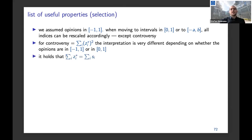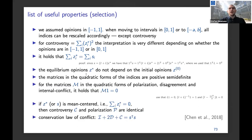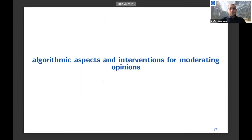Another interesting fact is that the sum of expressed opinions is always the same as the sum of innate opinions. There are a few more facts you can look at offline when the slides are uploaded. This finishes the part on the properties of the FJ model.